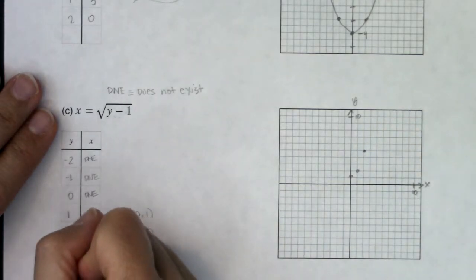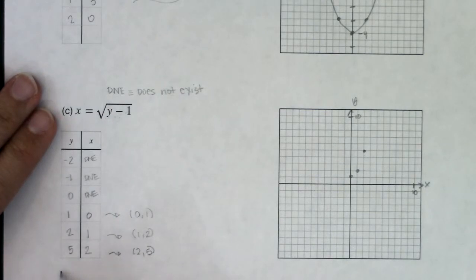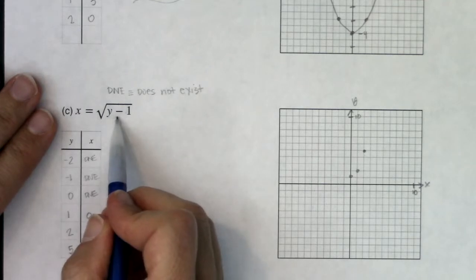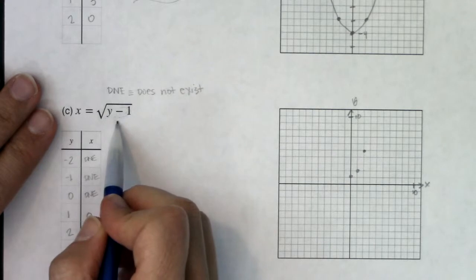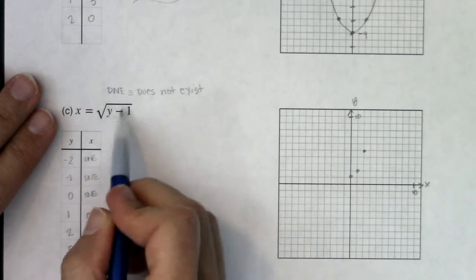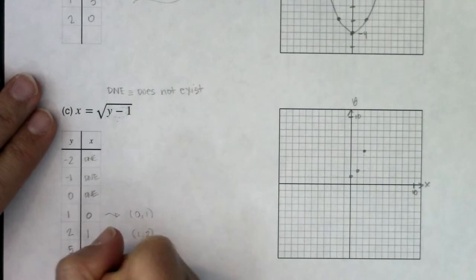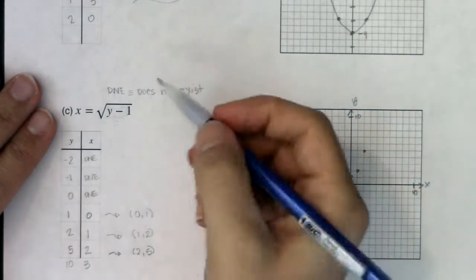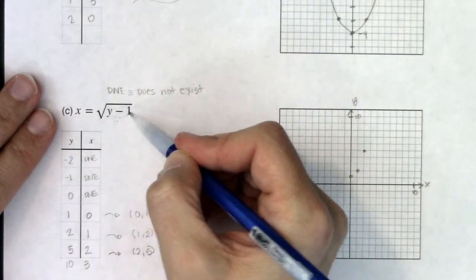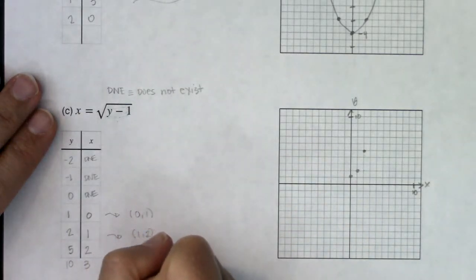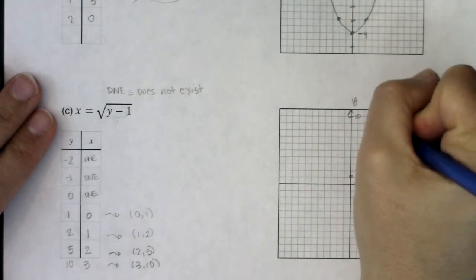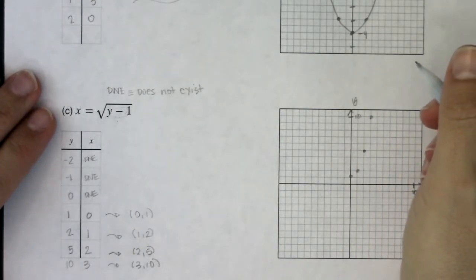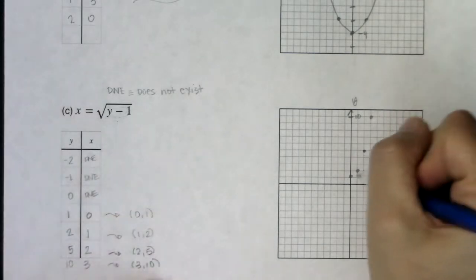Let's think about the next nice number to pick. I would like a 9 under the radicand, because √9 is a nice number. If I want y - 1 = 9, then y = 10. When I plug in y = 10: 10 - 1 = 9, and √9 = 3. That gives me the ordered pair (3, 10). Heading over there, I can start to see this graph taking shape.